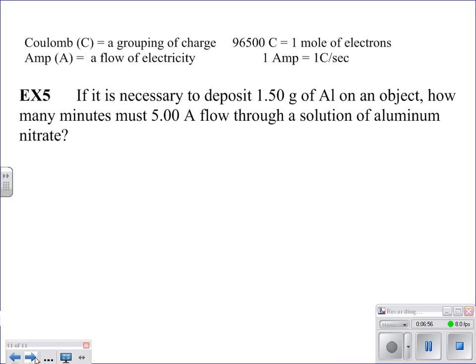This one says, if it is necessary to deposit 1.5 grams of aluminum on an object, how many minutes must five amps flow through a solution of aluminum nitrate? So I'm given two values here, but again, hopefully this jumps out at you, that you're given this important information. You want to deposit aluminum, solid aluminum, on an object by putting it into the solution of aluminum nitrate and passing a current through it. So you're starting with your aluminum ions, and you want to get solid aluminum. So this is our half reaction that's going to be important for us. So I look back, and this catches my eye. There's that big old A. I don't want to see it as an A. I want to see it as coulombs per second. That's how I'm thinking about it.